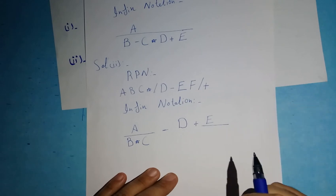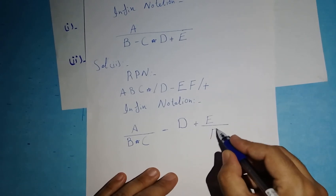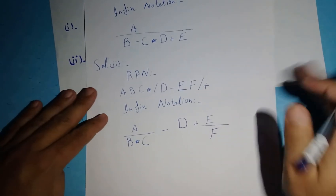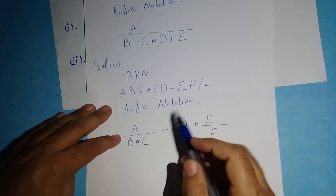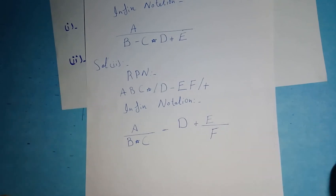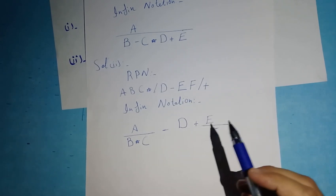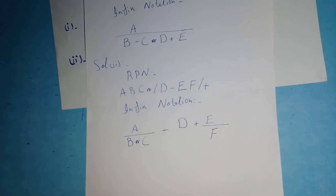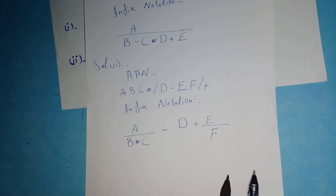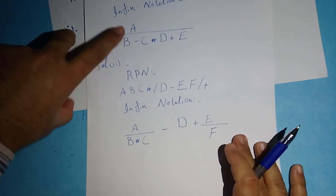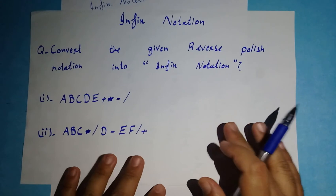After plus, the sign is division, so I write division. Then variable 'f' comes. Now checking: variables in RPN are 1-2-3-4-5-6, and I've written 1-2-3-4-5-6. Signs: 1-2-3-4-5, and I've written 5 signs. I've completely converted this RPN into infix notation. I hope you understood how to convert Reverse Polish Notation into infix notation.